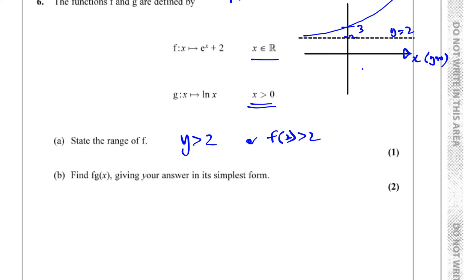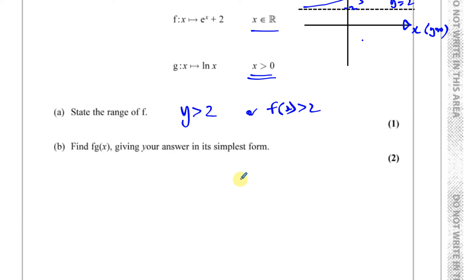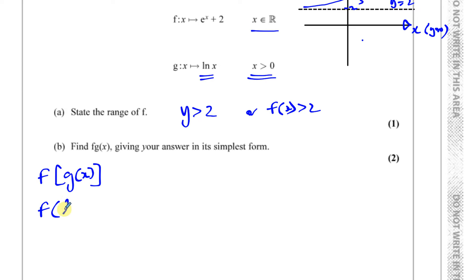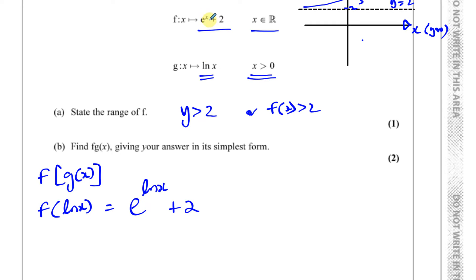Now, find fg of x giving your answer in its simplest form. fg of x is a composite function where you take the function g — the one mentioned second — and put it inside function f. So we take g of x which is ln x, and replace the x in function f with ln x. Function f of x is e to the power of x plus 2, so you take e to the power of ln x, replacing x with whatever function g is, plus 2.